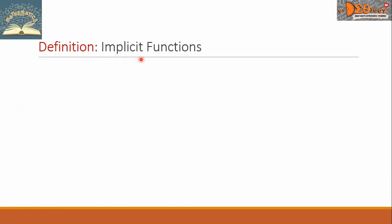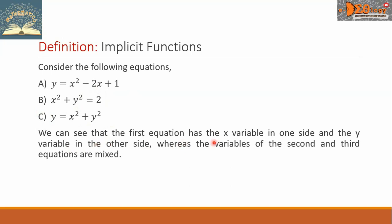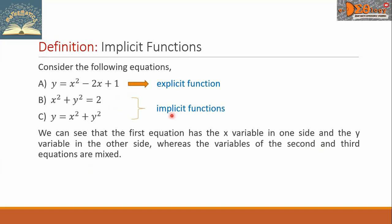Let us first define implicit functions. Consider the following equations. Equation A: y equals x squared minus 2x plus 1. Equation B: x squared plus y squared equals 2. Equation C: y equals x squared plus y squared. The first equation has the x variable on one side and the y variable on the other side, whereas the variables of the second and third equations are mixed. The first equation is called an explicit function, while the two other functions are called implicit functions.